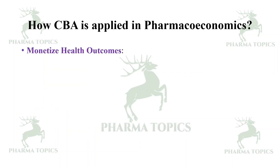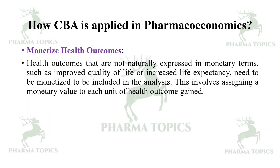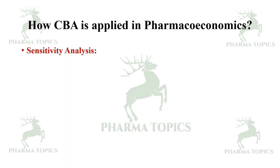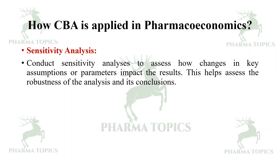Then monetize the health outcomes — health outcomes not naturally expressed in monetary terms, such as improved quality of life or increased life expectancy, need to be monetized by assigning a monetary value to each unit of health outcome gained. Then calculate the net benefit by subtracting the total costs from the total benefits — a positive net benefit indicates the intervention's benefits outweigh its costs, making it economically favorable. Conduct sensitivity analysis to assess how changes in key assumptions or parameters impact the results, helping assess the robustness of the analysis.